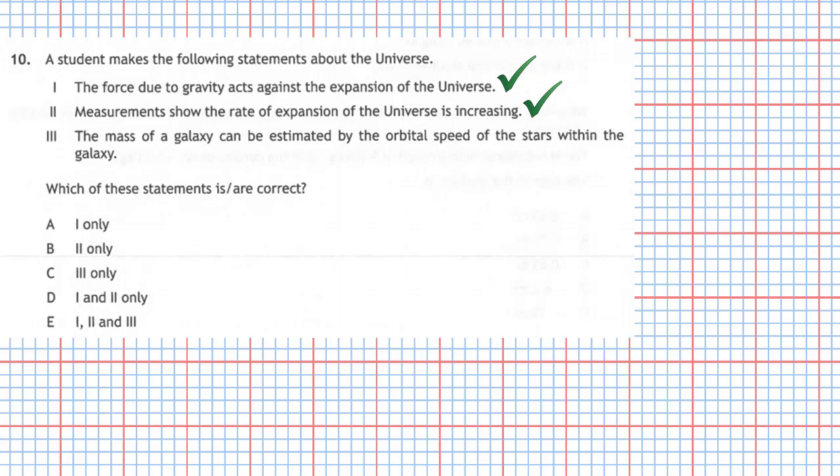Statement 3 - The mass of a galaxy can be estimated by the orbital speed of the stars within the galaxy, and that is true as well. So all three statements are true, and that leaves us with statement E. The answer for this one will be E.